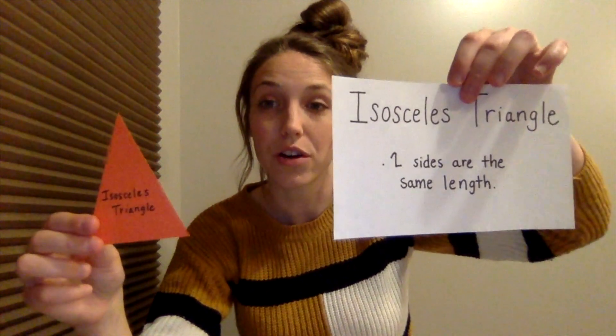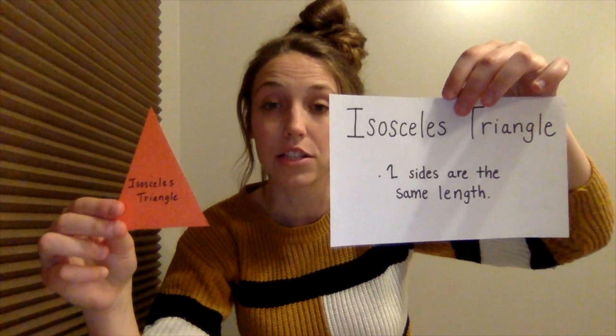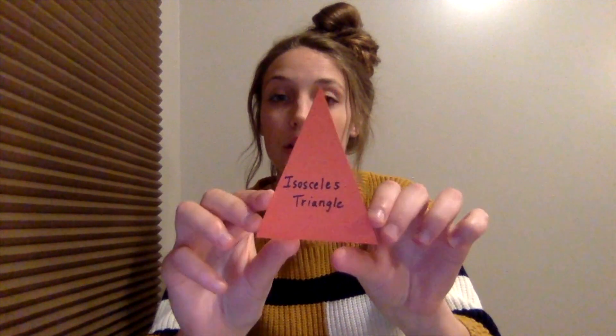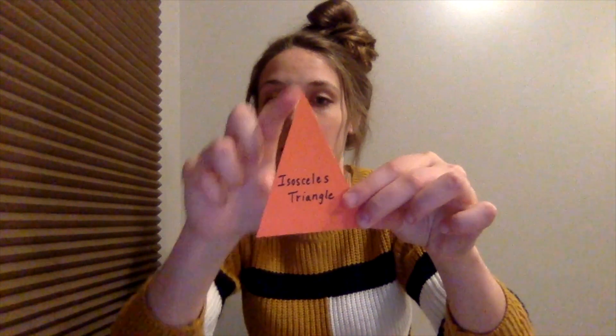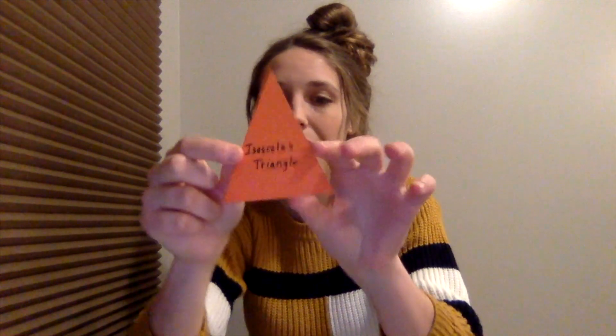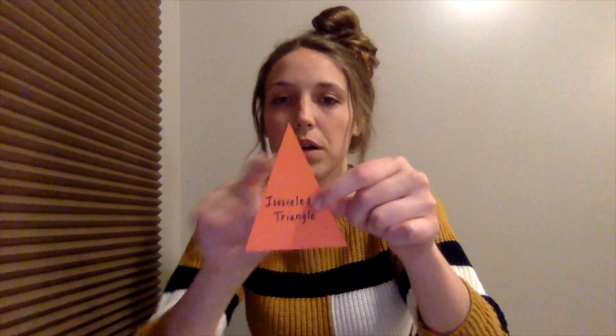Our next one is our isosceles triangle. An isosceles triangle means that two sides are equal in length. If you look here, you can see that this side and this side are the exact same. The bottom side is not the same, so it has two equal sides, which means isosceles.